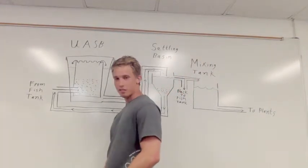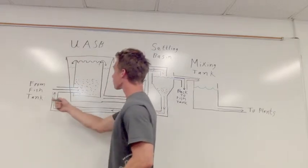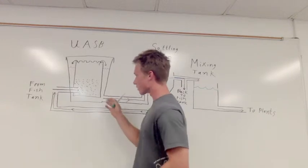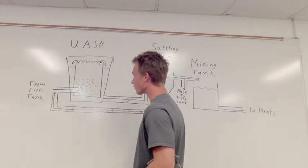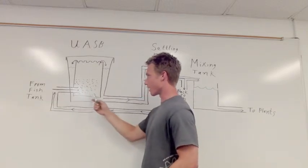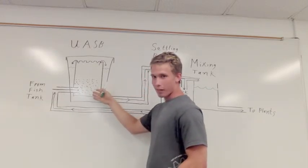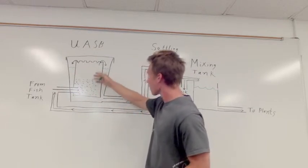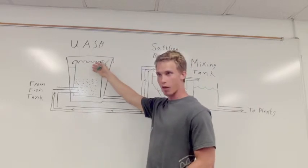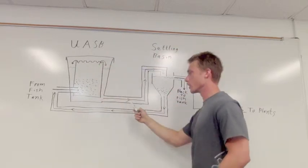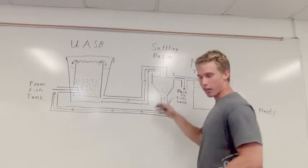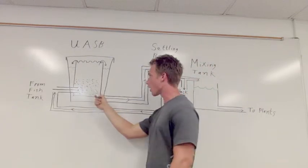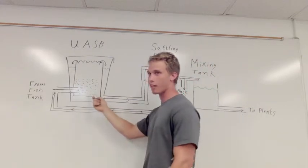Once the water leaves the fish tank, it comes to our upflow anaerobic sludge blanket, an anaerobic digester that breaks down solid fish waste. It's broken down by bacteria and all the solid matter stays there. Once it clears up, it comes up and over our weir, then flows into our settling basin. Any extra solids are caught here and fed back into the anaerobic environment to be broken down further.